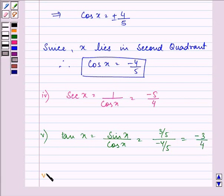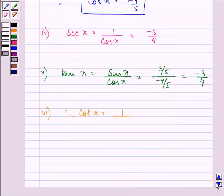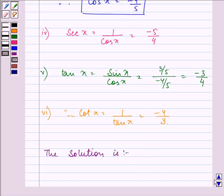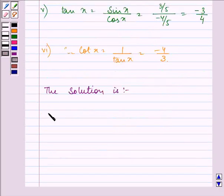And we are left with finding out the value of cot x, that is 1 divided by tan x, that is minus 4 by 3.